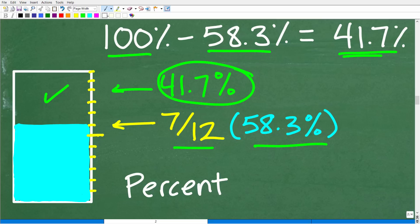So all we have to do is subtract 58.3% from 100%. And we end up with 41.7%. So that is the percentage of this cup that is empty. All right, so this is one approach that you could take, but there is another simple approach as well.